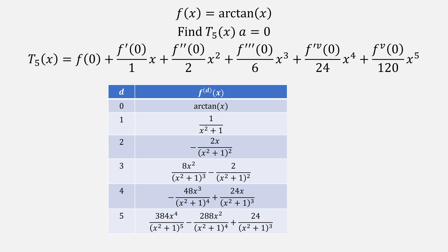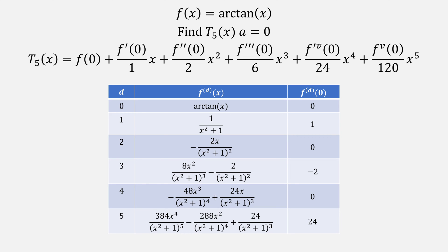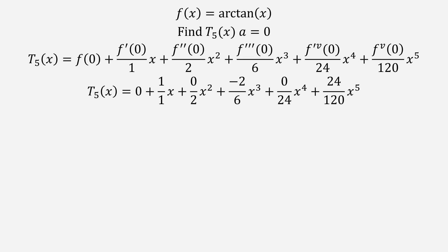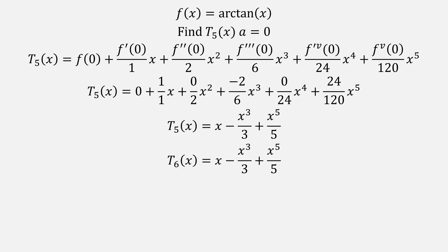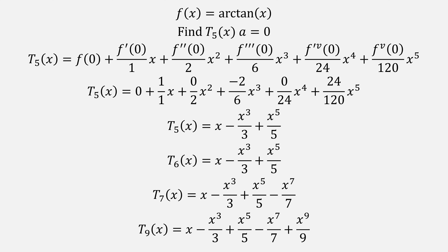From here, we're going to need to take five derivatives and then evaluate all of those functions at 0. Plugging all these new values into our Taylor polynomial gives us something that looks like this. Notice those zeroed terms will go away, giving us our fifth order Taylor polynomial simplified. If we had taken the sixth order, we would have added another zero term. Our seventh order would look like this, and our ninth order would look like this.